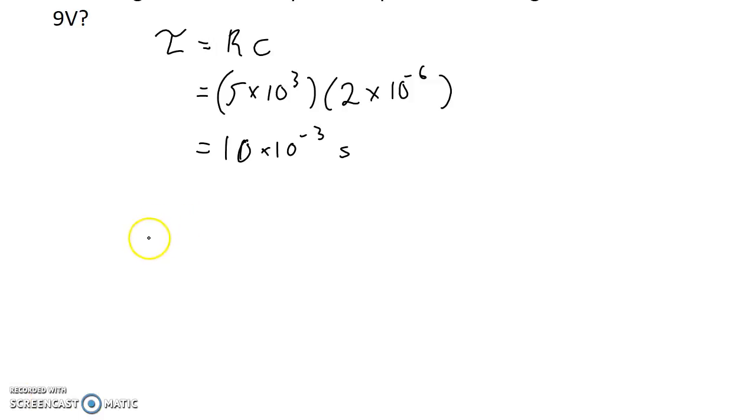So to answer that we're going to use our relationship between the voltage at any time, the original voltage, and time. So that's an arbitrary time, and this is our time constant. Now this equation is actually for discharging. This would be the original voltage, and this would be the voltage at some other time in the future, and we would expect it to be an exponential decay curve.